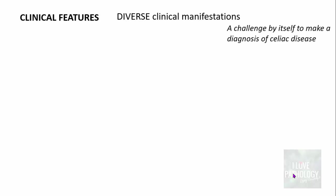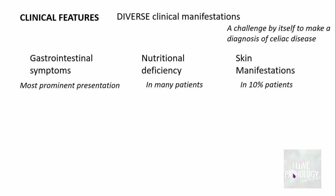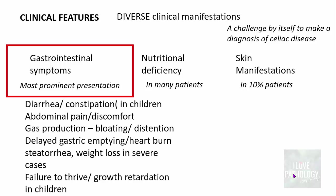The average age of diagnosis for celiac disease is around the fifth decade of life. Patients present with diverse clinical manifestations, requiring a high index of suspicion. The most common symptoms are gastrointestinal, followed by nutritional deficiency in many patients, and around 10% present with skin manifestations. GI symptoms include diarrhea or constipation, abdominal pain, bloating, delayed gastric emptying, heartburn, steatorrhea, and weight loss in severe cases.